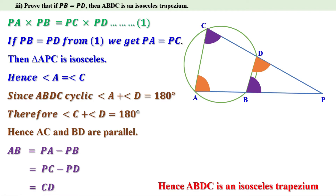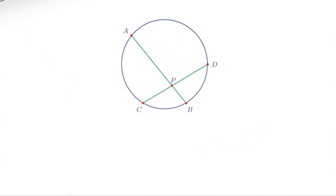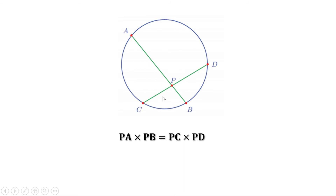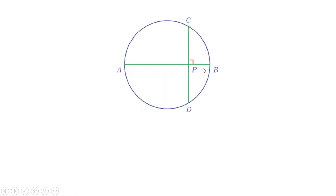Today let us learn the remaining part of the section on chords. We know when two chords AB and CD intersect within the circle at P, then PA into PB equal to PC into PD. Suppose one of the chords is a diameter — the diameter is the longest chord, the chord which passes through the center. And suppose the other chord is perpendicular to the diameter. Then AB is a diameter and CD is a chord perpendicular to AB. These two chords intersect within the circle at P. Therefore, PA into PB equal to PC into PD.